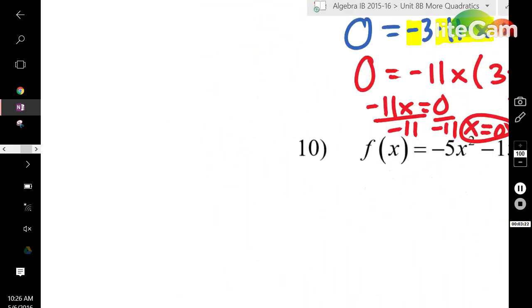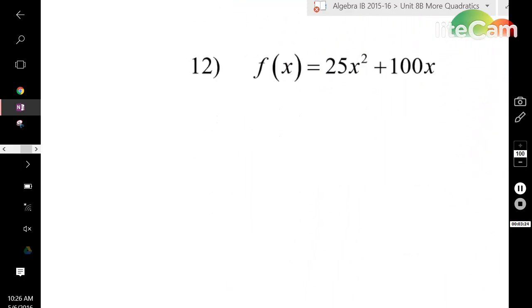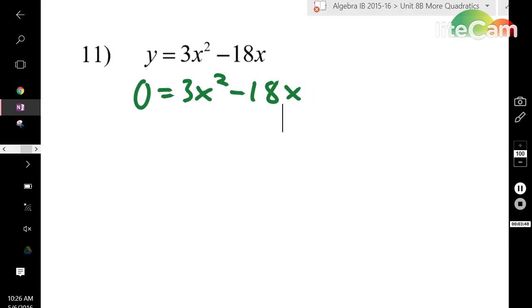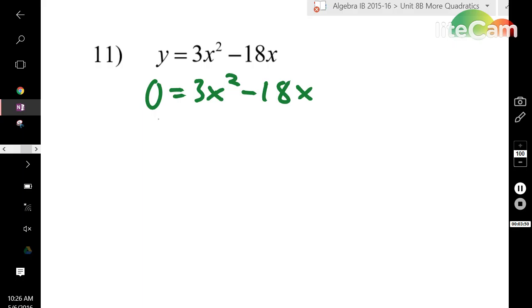Let's try another one. Number 11. Y equals 3x squared minus 18x. First, set the equation equal to 0. Finding zeros. And next, see what the GCF is with both numbers. We have 3 and 18. 3 does go into 18. But it doesn't have to for it to not have a GCF. But in this case, it does. So, we're going to rewrite everything in terms of factors.